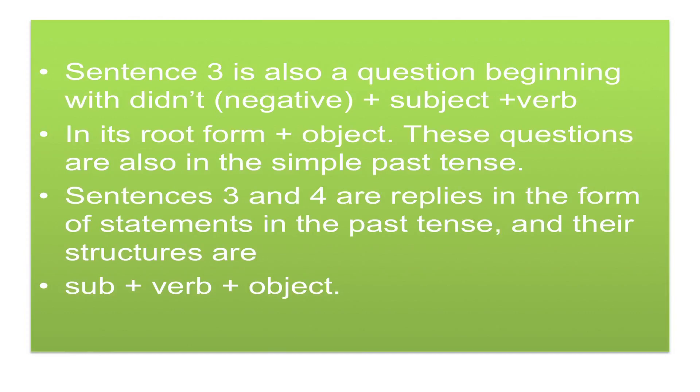Sentence 3 also has a question beginning with 'didn't', that is: negative + subject + verb in its root form + object. These questions are also in the simple past tense. Sentences 2 and 4 are replies in the form of statements in the past tense, with the structure: subject + verb + object. It must be noted that positive statements in simple past take the second form of the verb, but interrogative sentences begin with interrogative words such as when, why, where, followed by did or did not, and the verb is used in its root form.